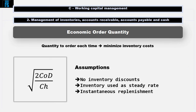Other assumptions of the EOQ model are: inventory is used at a steady rate throughout the year, and replenishment is instantaneous once the reorder point is reached, or, perhaps more realistically, the lead time is consistent and can be predicted with accuracy.